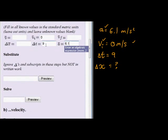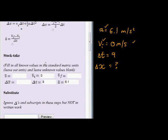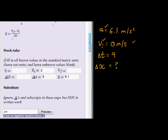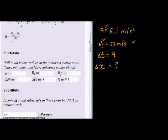So now in the substituting step, let's go and substitute. So there's our formula. We're going to use it just like that. They also tell us to ignore deltas and subscripts in this step, but not in written work. So when you write this, please write your deltas, but here you can just type it as X equals. Since we know our formula, let me first write it out here. We know our formula as delta X equals the initial velocity times time plus half acceleration times delta T squared.